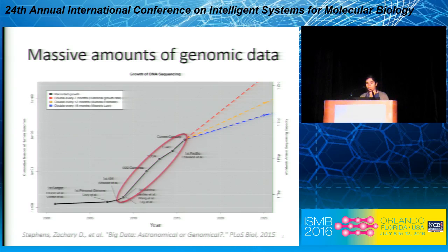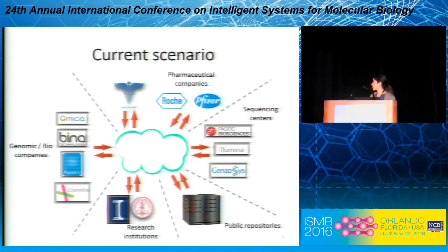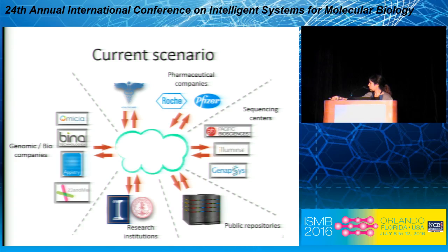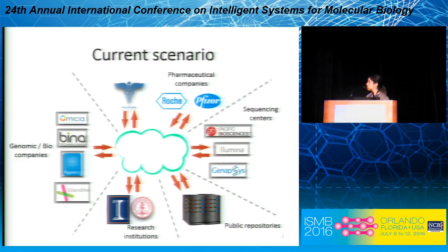It's important to design compression algorithms, especially because the data is generated in sequencing centers and then transmitted to either companies or research institutions. This data is analyzed and a lot of the time stored in public repositories. So if we can decrease the size of the data, accessing it is going to become faster, and because the size is smaller, storing it is also going to become cheaper.